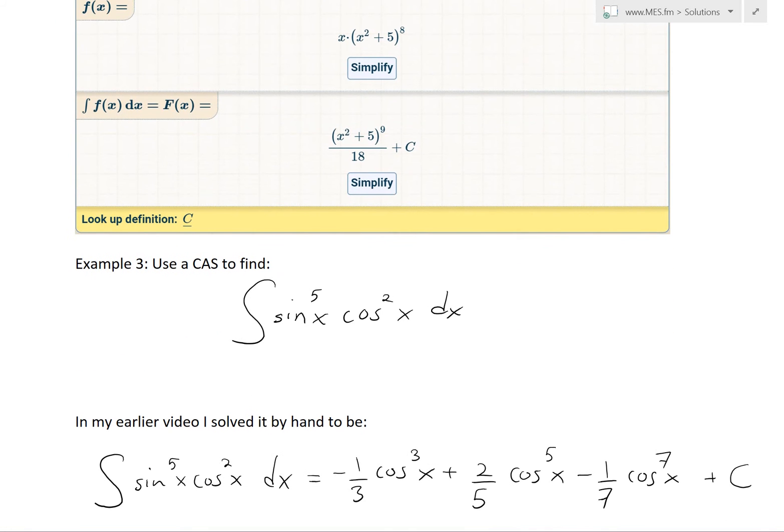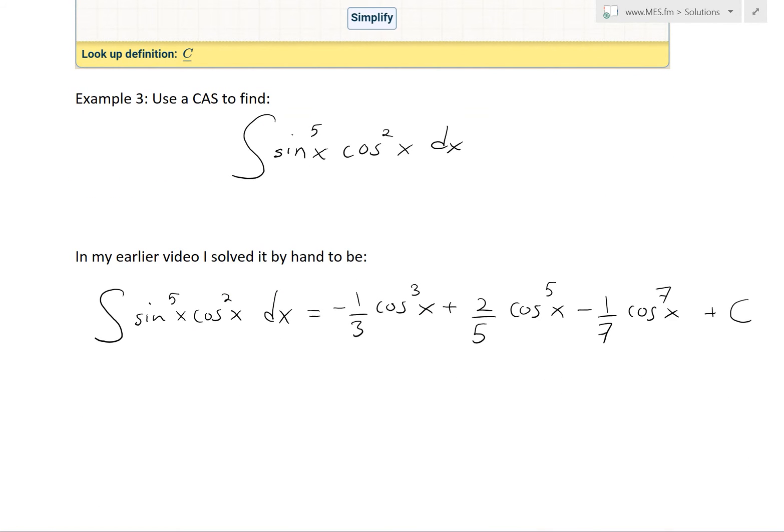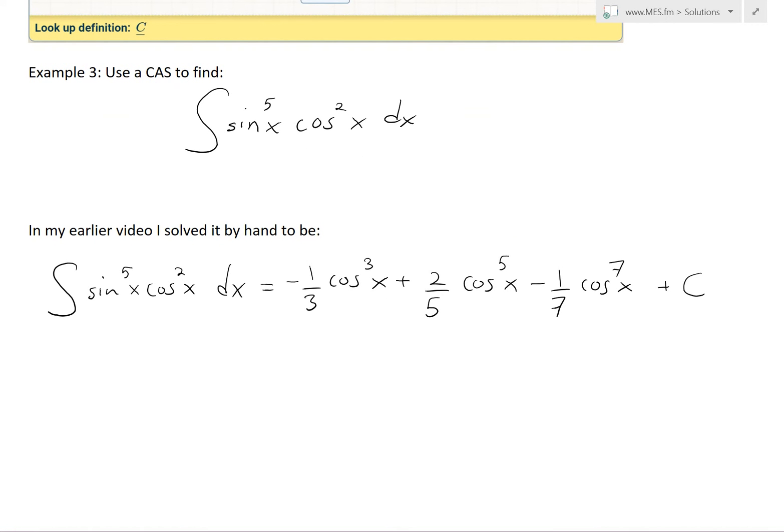So now, if we look at example 3, it says use a CAS to find this integral sine power of 5x times cos x squared dx. And just to note that in my earlier video, I had solved this by hand. And you can see that in the video link below.